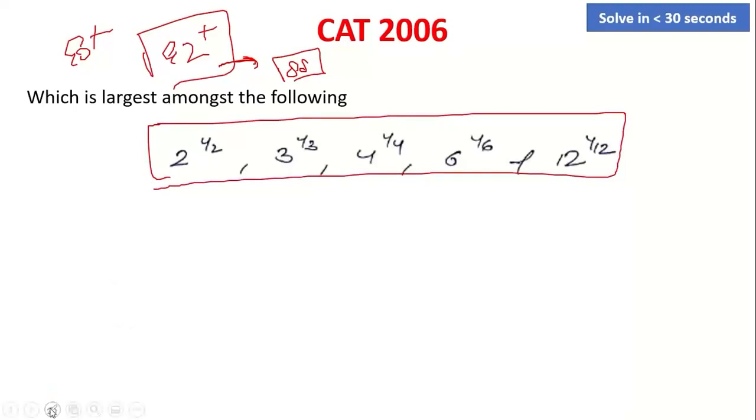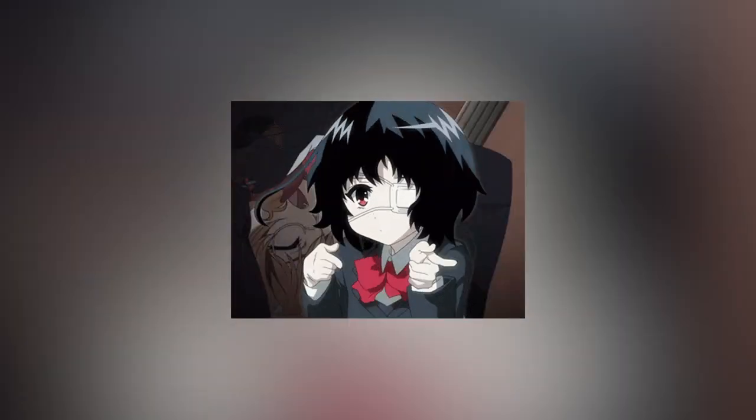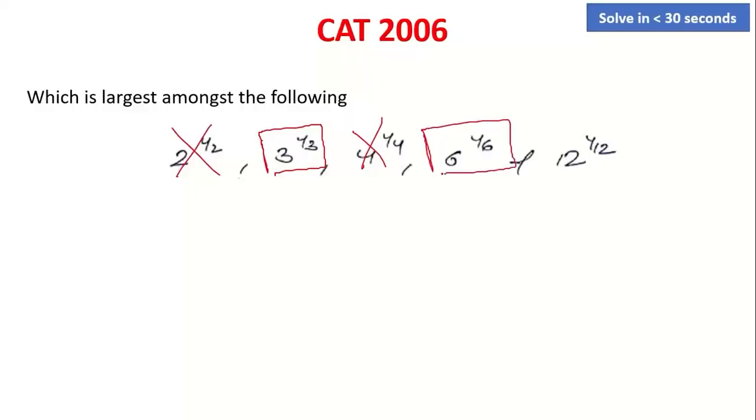First of all, we can very easily eliminate these two options because they are equal. Next thing. 3 raised to 1/3, 6 raised to 1/6, 12 raised to 1/12.